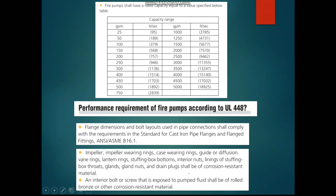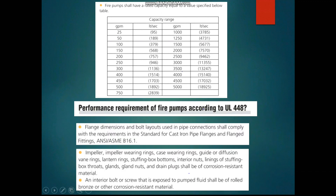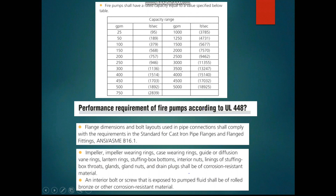The performance requirements of fire pumps according to UL 448 include several conditions. If you go to UL 448, there are plenty of requirements to follow to get a pump certified. The flange dimensions and bolts must comply with ASME B16.1. Impellers and impeller wear rings should be manufactured from corrosion-resistant material. Interior bolts or screws in contact with fluid directly should also have corrosion-resistant material or rolled threads.